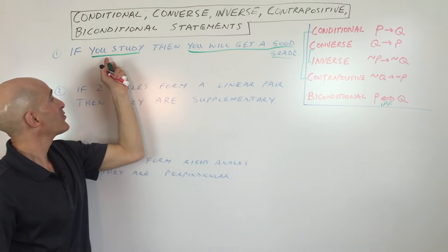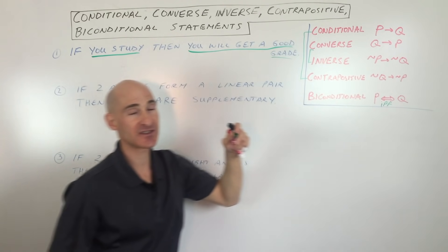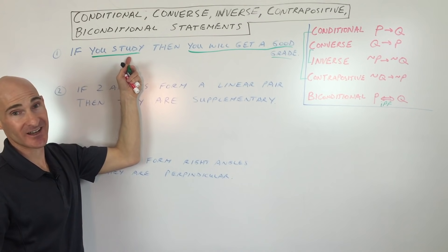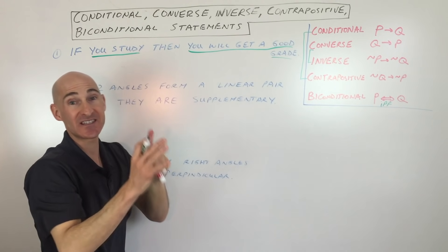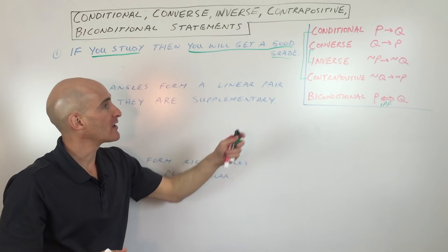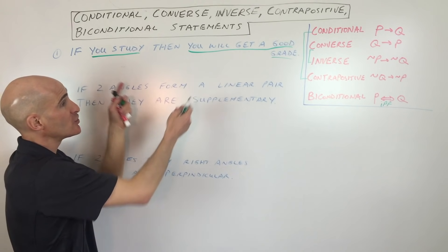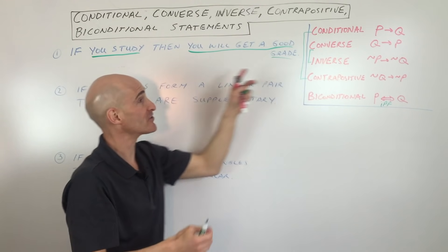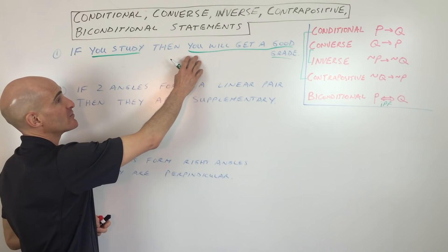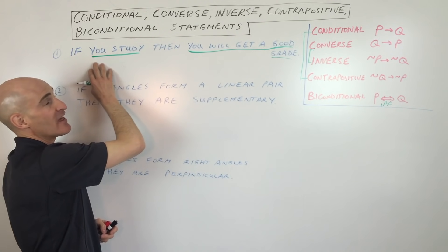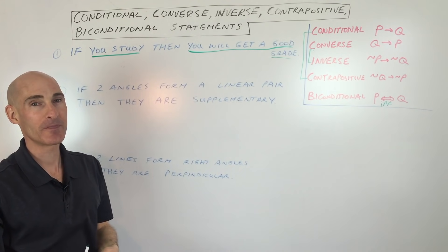The inverse adds 'not' to negate both the hypothesis and the conclusion: 'If you do not study, then you will not get a good grade.' Notice we kept the hypothesis and conclusion in the same order — we only negated them. The contrapositive combines the converse and inverse — you switch and negate both: 'If you do not get a good grade, then you did not study.' That's true if the original conditional statement is true.